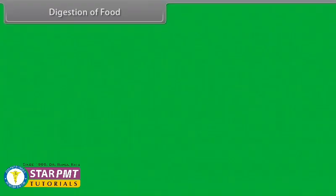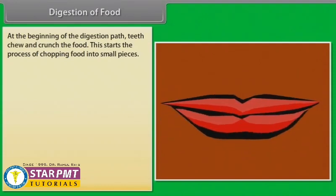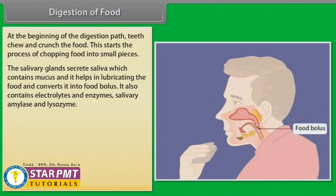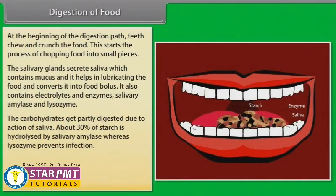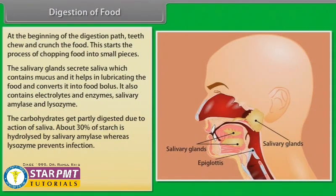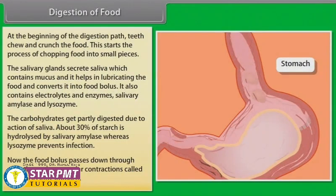At the beginning of the digestion path, teeth chew and crunch the food, chopping it into small pieces. The salivary glands secrete saliva containing mucus, which lubricates the food and converts it into a food bolus. Saliva also contains electrolytes and enzymes — salivary amylase and lysozyme. About 30% of starch is hydrolyzed by salivary amylase, while lysozyme prevents infection. The food bolus then passes down through the esophagus by muscular contractions called peristalsis into the stomach.